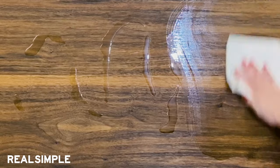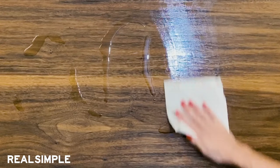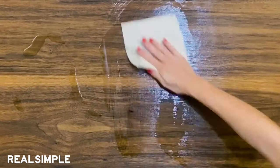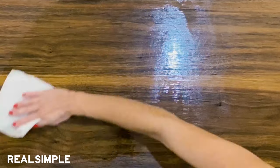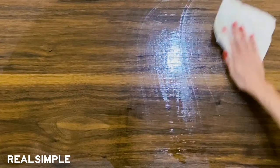Then you want to apply the oil pretty liberally onto the furniture and use a paper towel to distribute it across the surface. Let this soak in for about one hour.